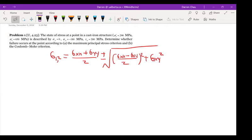Sigma xx equals to 0, sigma yy equals to negative 180 MPa, tau xy equals to 200 MPa.